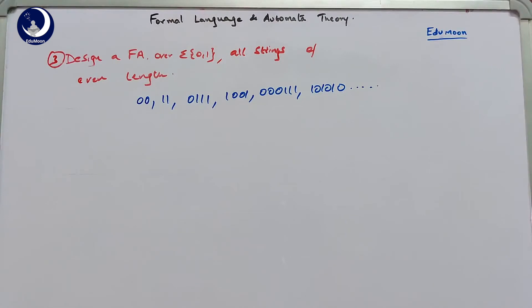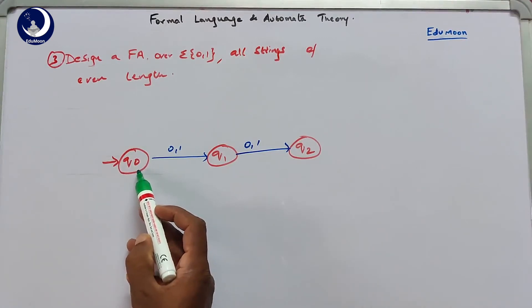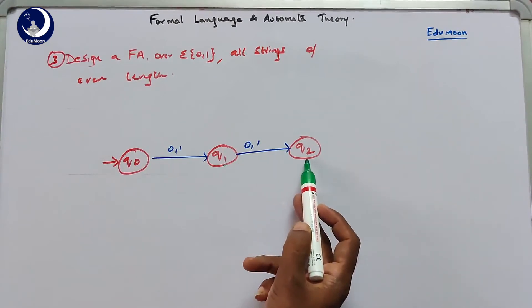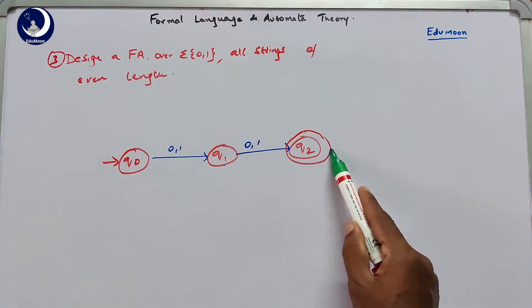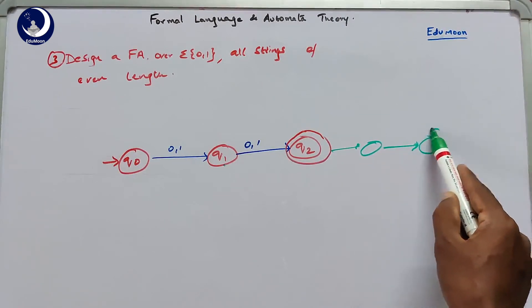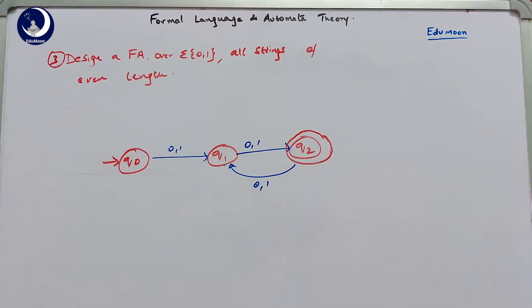This machine can be seen with states q0, q1, q2. From q0 you read either 0 or 1 — the first symbol — and you come to q1. From q1 you read the next symbol, either 0 or 1, and you come to q2. The length is now even: for the first symbol you come to q1, for the second symbol you come to q2, so you have read 2 symbols and it gets accepted. We make q2 the final state. For strings of length 4, after q2 we can write a self-loop back to q1, so the third symbol goes back to q1, the fourth symbol goes to q2, and so on.